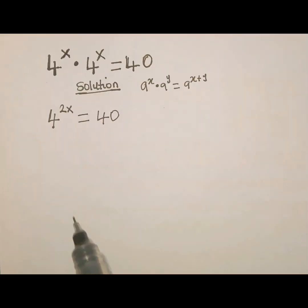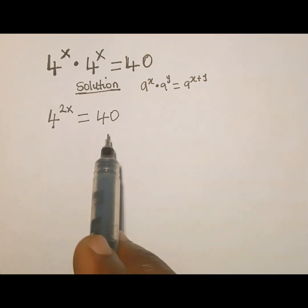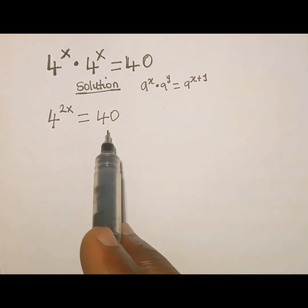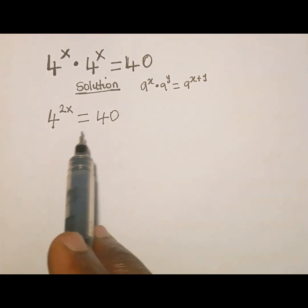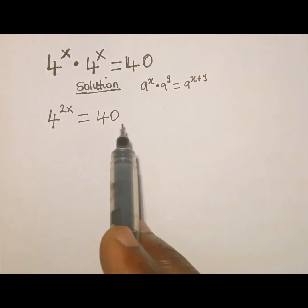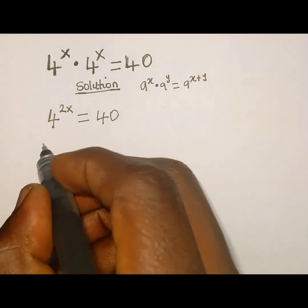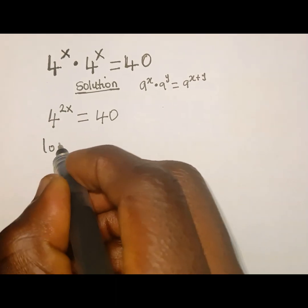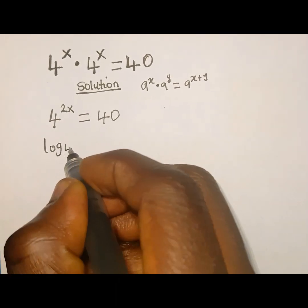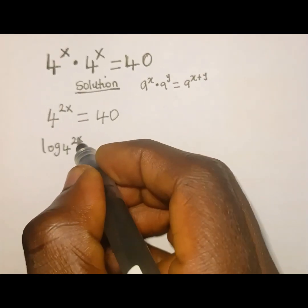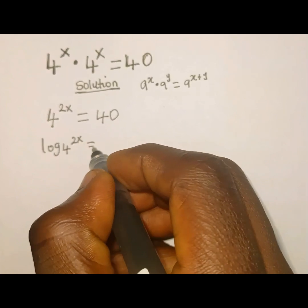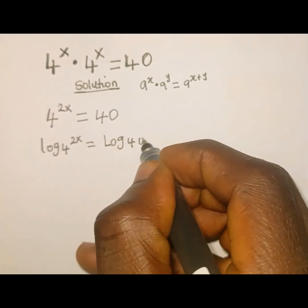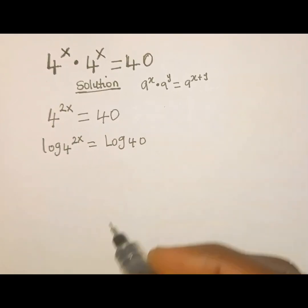The next thing we are going to do — as you can see, if you look at this equation, there is no way we can balance the base. So we are going to take the log of both sides to base 10. We take the log of the left hand side: log of 4 raised to the power of 2x to the base of 10, which is equal to log of 40 to the base of 10.